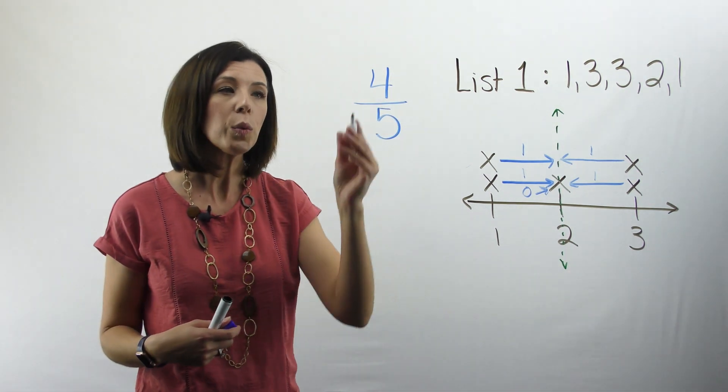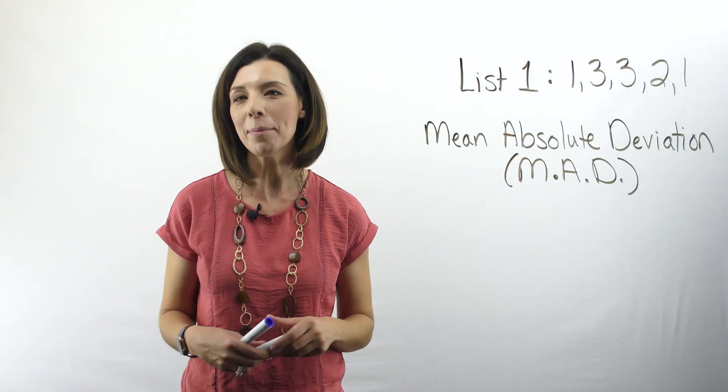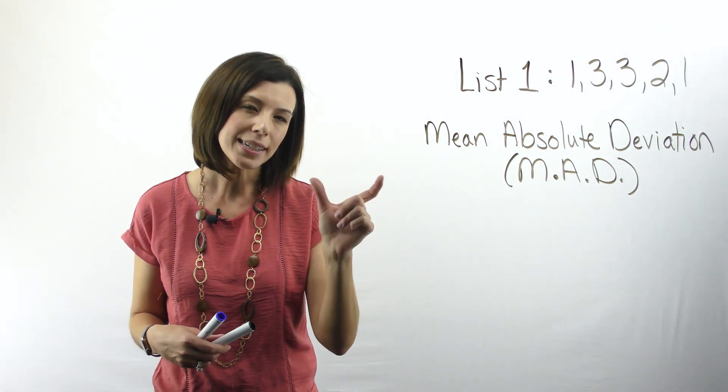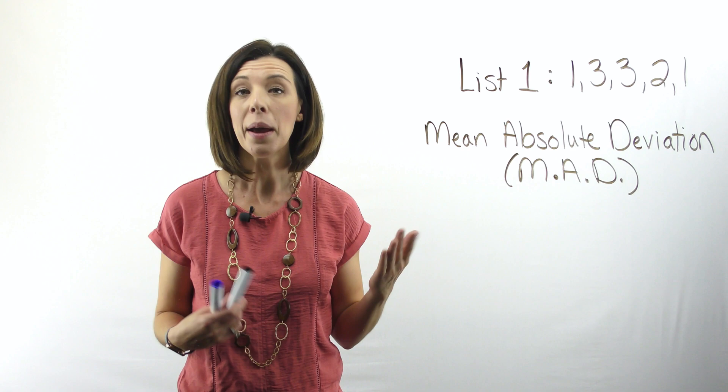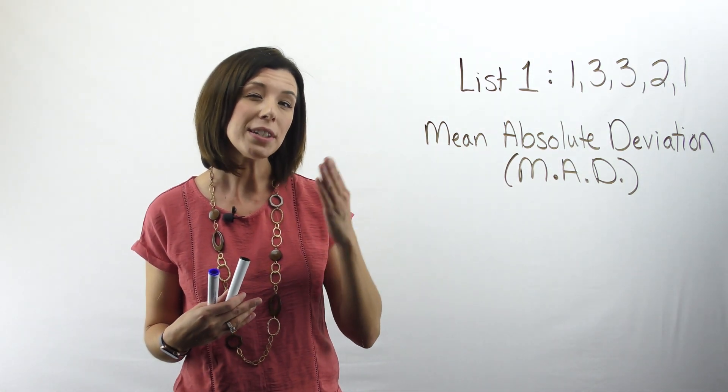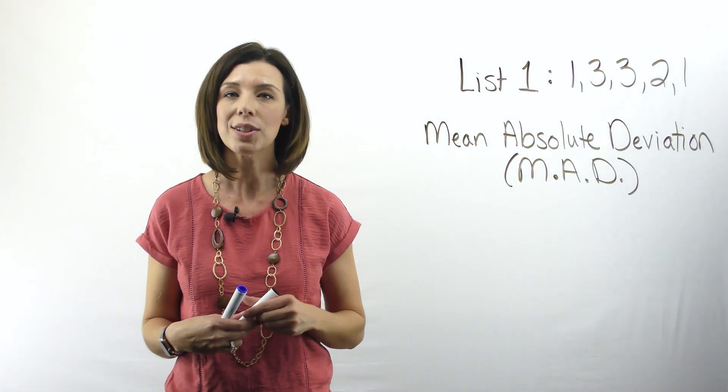My MAD for list 1 would be 4/5. Remember, to define the mean absolute deviation, we need to define that distance between each data point and the mean. Mathematically, that's going to be absolute value. So we're going to take the absolute value of the data point minus the mean to start.